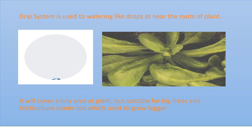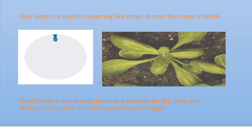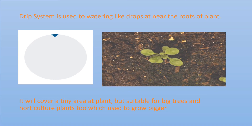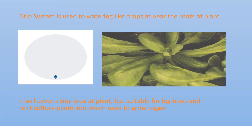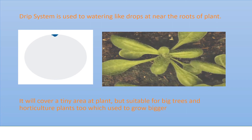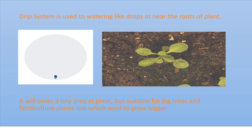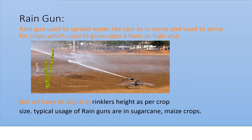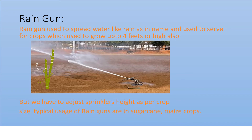Sprinkler irrigation works like rain — you can shoot water up and it comes down like rainfall. The sprinkler grows up to 4 feet high and we adjust the sprinkler height per crop size. Sprinkler irrigation is used for sugar cane or maize crops.